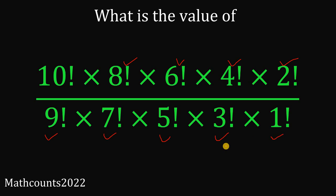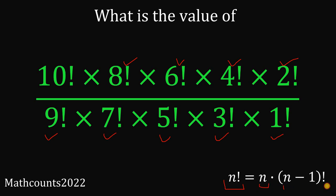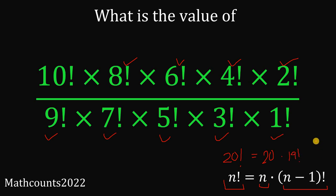To answer this question, we will use one concept. Take note: when we have n factorial, this can be written as n multiplied by (n minus 1) factorial. So if we have 20 factorial, this can be written as 20 multiplied by 19 factorial. We will use this concept to answer this question.